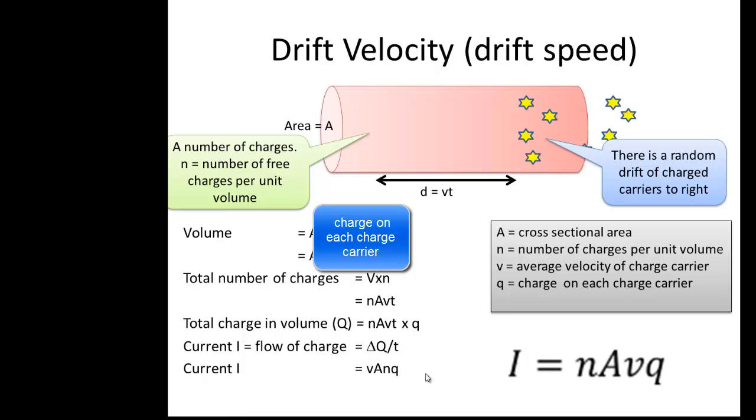And in the data booklet it is written this way: I equals nAvq. Quite often you need to rearrange this to find out what v is. You're told what the current is, the number of charge carriers per unit volume, and so on, and you have to find v. I found a web page where we have a little exercise to do on that.